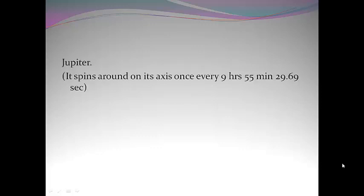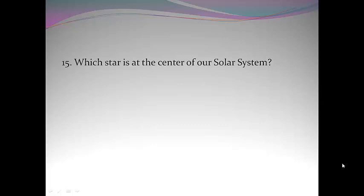14. Which planet has the shortest day? Jupiter. It spins around on its axis once every 9 hours 55 minutes 29.69 seconds.